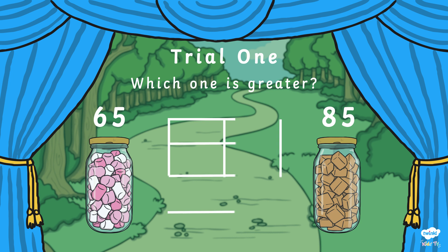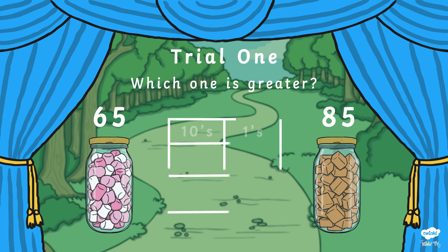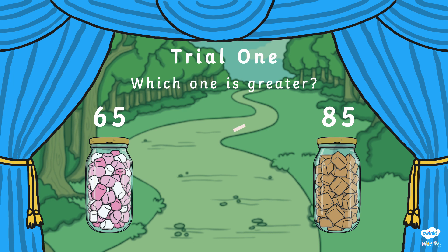First, we need to bring up our place value grid. We need our tens and our ones columns. Now place our digits into the correct columns: 65 and 85. We always start at the left-most column. We have 60 and 80. Which one is greater than the other? It's 80! That means that 85 is greater than 65. As 65 is less than 85, we place the arrow this way round.